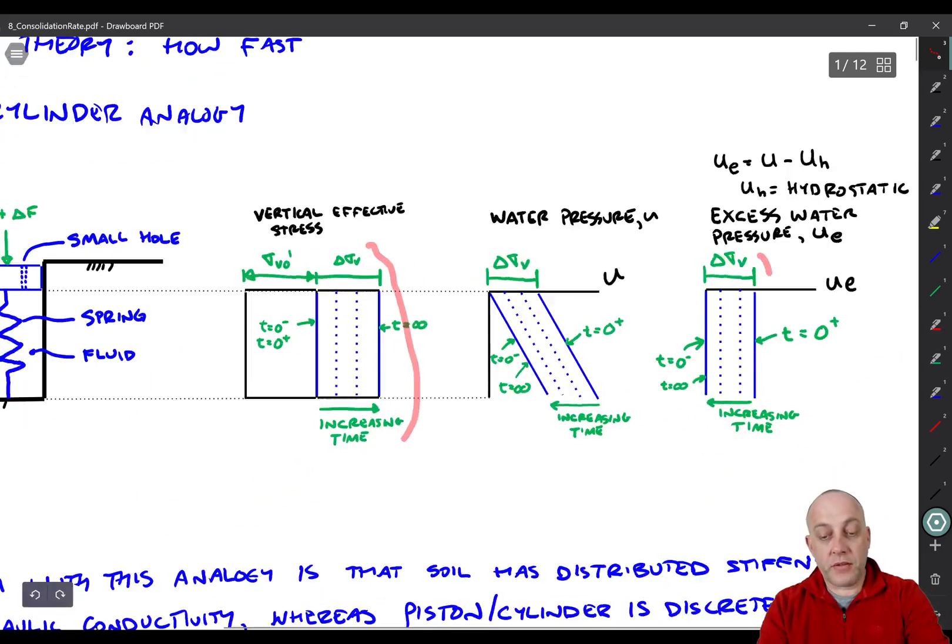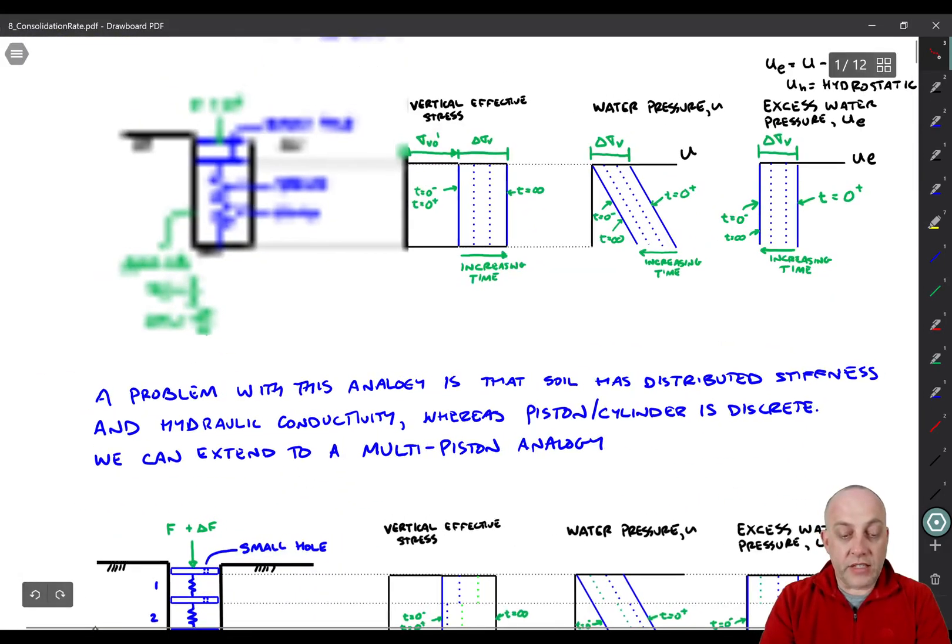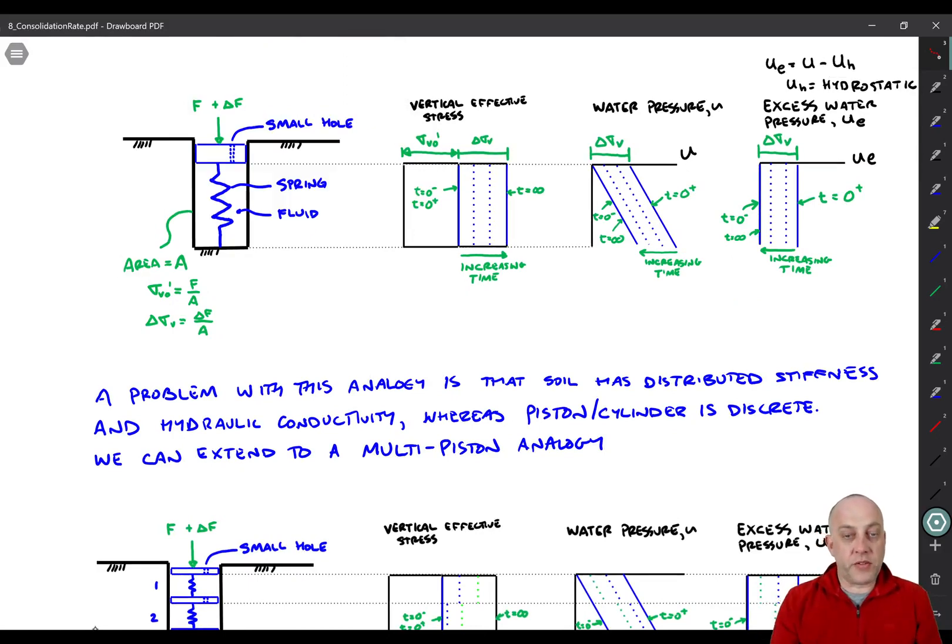Okay, now this is a useful analogy for us to start to understand consolidation behavior of soil. But, of course, there's a problem that soil has distributed stiffness and distributed hydraulic conductivity. And this is kind of a discrete example where you have one piston, one cylinder. So, but we can extend this now to a multi-piston analogy.